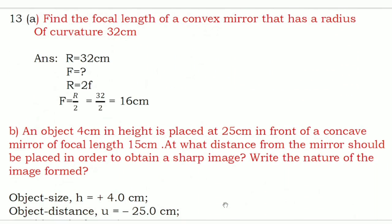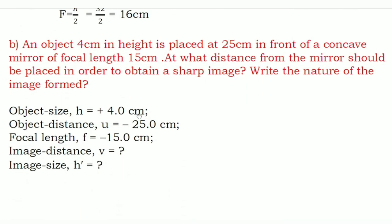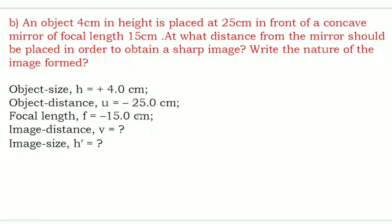Thirteenth question, part A: find the focal length of a convex mirror that has a radius of curvature of 32 centimeter. Given: R = 32 cm. Using the relationship R = 2f, we get f = R/2 = 32/2 = 16 centimeter. Therefore, the focal length of the convex mirror is 16 centimeter.